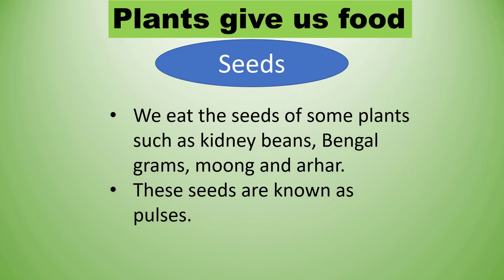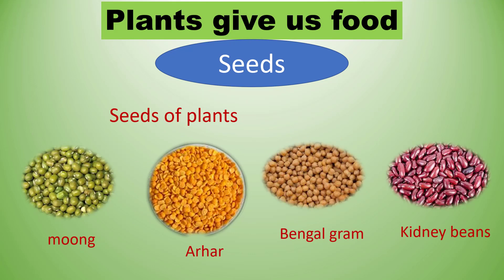We eat the seeds of some plants such as kidney beans, bengal grams, moong, and arhar. These seeds are known as pulses. Friends, do you know pulses contain protein which is healthy for humans? You can see some pictures of moong, arhar, bengal gram, and kidney beans.